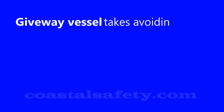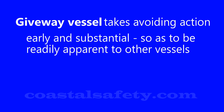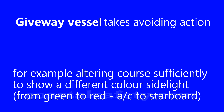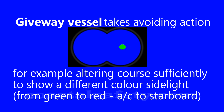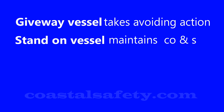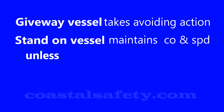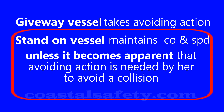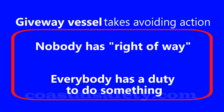Let's look at the give-way vessel and the stand-on vessel — what do these terms mean? The give-way vessel takes avoiding action; it should be early and substantial so as to be readily apparent to other vessels. For example, watching the give-way vessel, you can see her green light become a red light as she alters course to pass astern. However, the stand-on vessel must maintain course and speed unless it becomes apparent that avoiding action is required. Nobody has right of way — everybody has a duty.